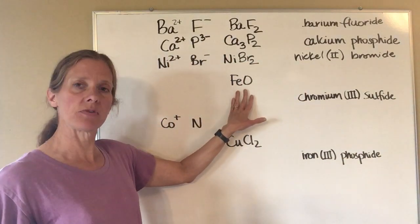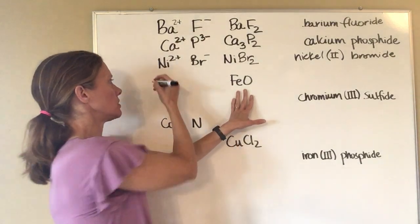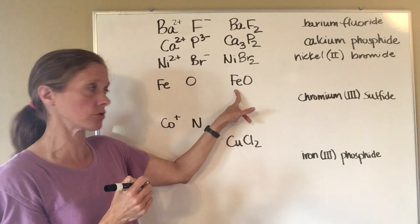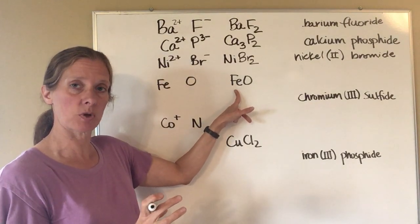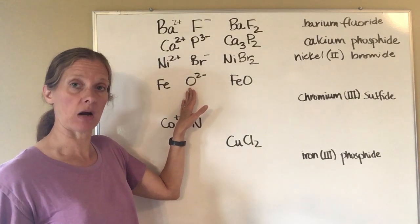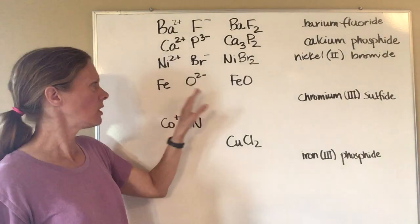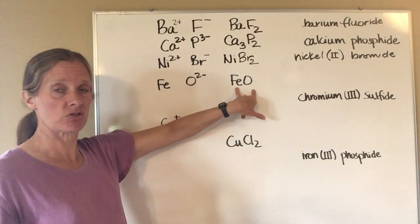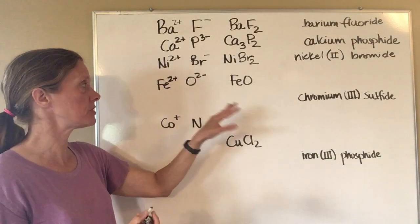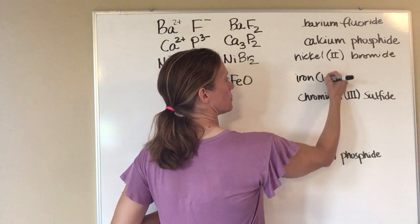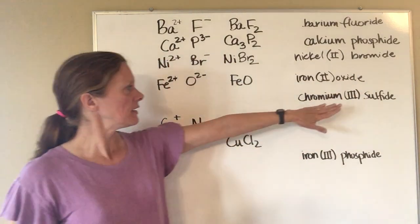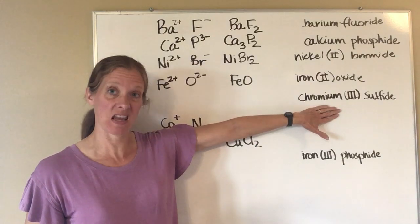This time I've given you the compound: iron and oxygen. To figure out the name, I need to determine the charge on iron — I can't name it without knowing, since iron is a transition metal. Oxygen has a negative two charge based on its column. If I have one of each and the charges must balance, then iron must be positive two. Positive two and negative two add up to zero, so this is iron(II) oxide.